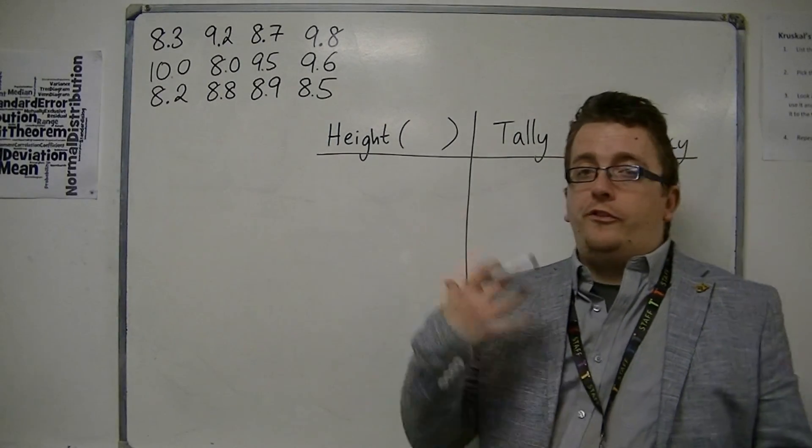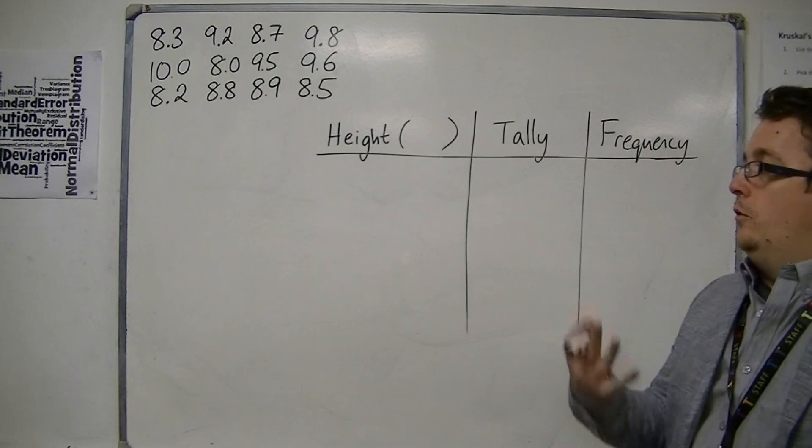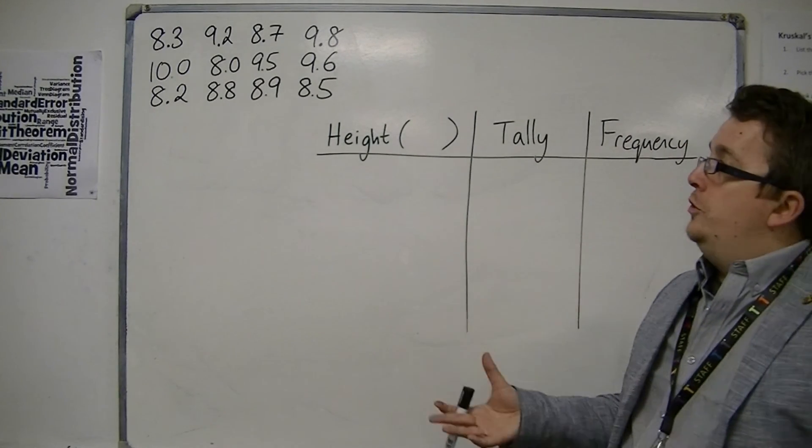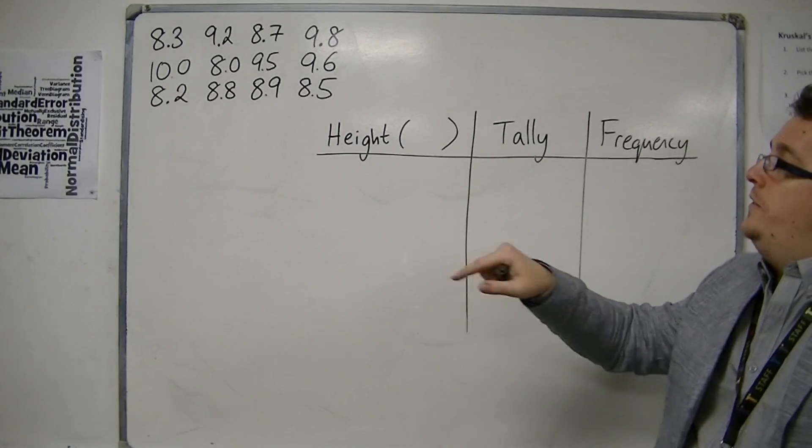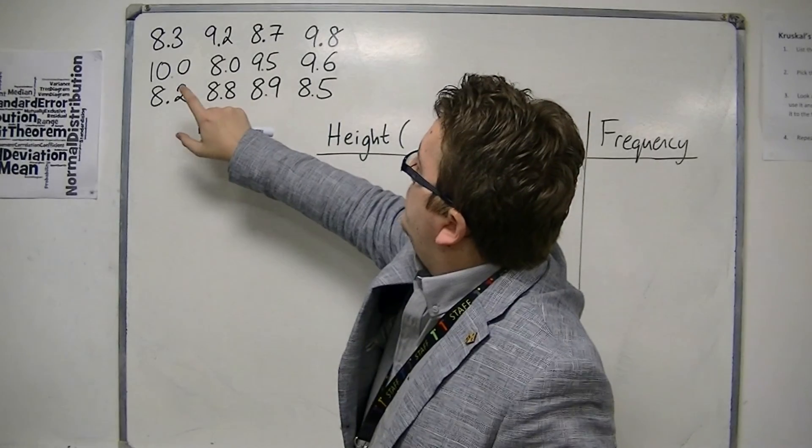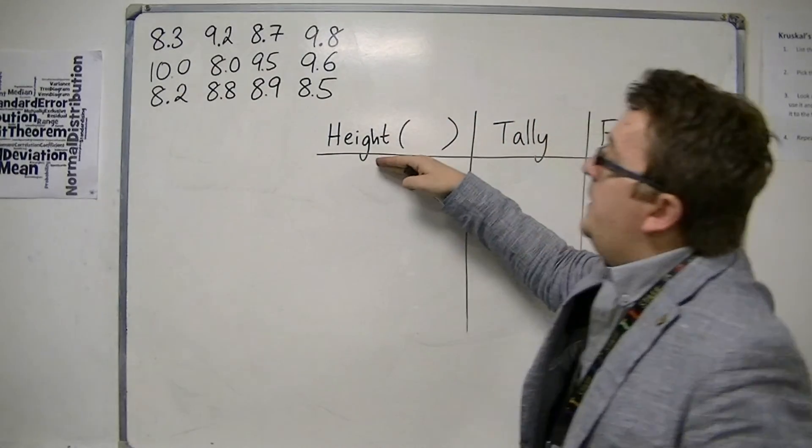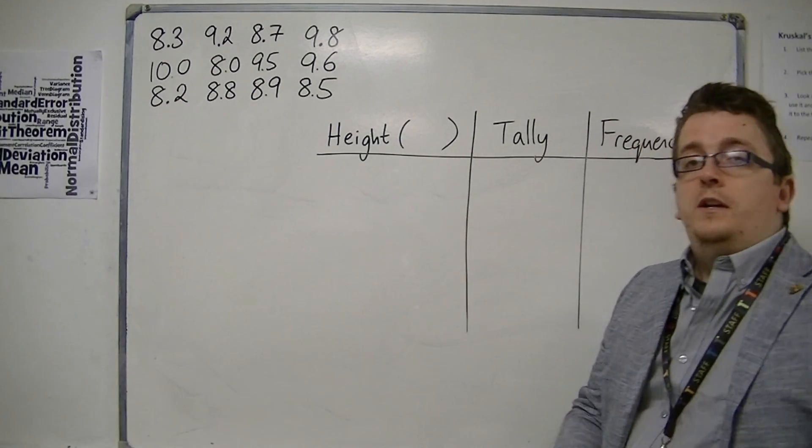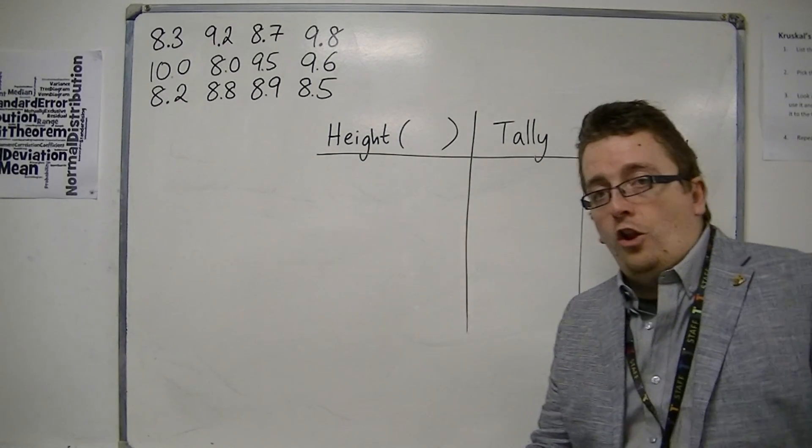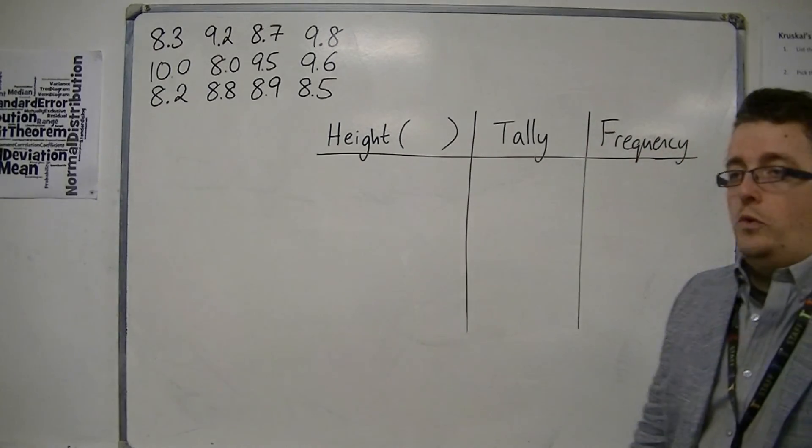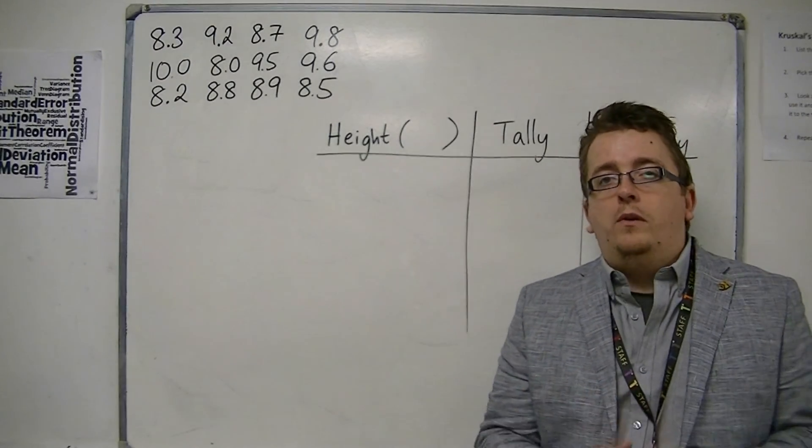What I want to do is form a tally chart to best represent them. Now, I could put in here the heights from my lowest, 8.0, from 8 up to 10—8.0, 8.1, 8.2, 8.3, 8.4—but it's going to be quite a long list and quite a long table. So what I might do is group them together.